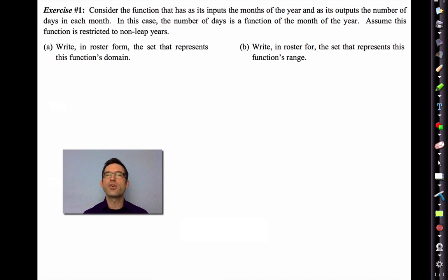Exercise one. Consider the function that has as inputs the months of the year, January, February, March, etc., and as its outputs the number of days in each month. In this case, the number of days is a function of the month of the year. In other words, if you say March, I'm going to tell you 31. If March is the input, 31 is the output. Assume that this function is restricted to non-leap years. That's actually quite important because if not, then February would have two outputs, both 28 and 29. And as we know, that's not allowed with functions.